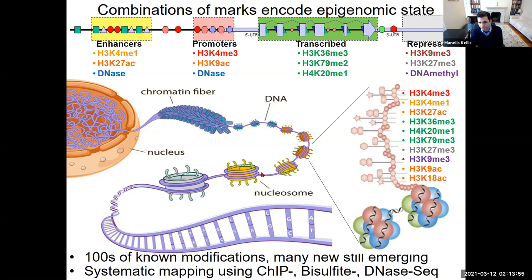Every nucleosome is made of four histone proteins each in two copies: H2A, H2B, H3, and H4. There are many variants. Every histone protein has a long amino acid tail sticking out that can be post-translationally modified — meaning that at histone H3, for example, lysine at position 4 (K4) can have one or three methyl groups, or one acetyl group.